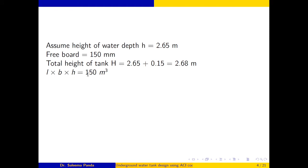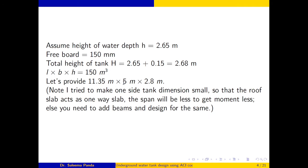The capacity of 150 cubic meters means length times width times height equals 150. The plan dimensions are 11.35 m × 5 m × 2.8 m. I chose the width to be smaller so the roof slab can be designed as a one-way slab. A larger span would produce very high moments requiring increased depth. Instead of adding intermediate beams, I made one span shorter and the other dimension longer.